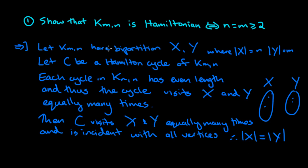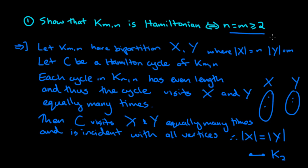Now we've seen that the size of X equals the size of Y. Of course, there are at least two vertices in each part, because otherwise — if there was only one in each part — you cannot even have a cycle in the graph. That graph is just a path on two vertices, or equivalently the complete graph on two vertices. It's too trivial to have a Hamilton cycle. So the sizes are equal and each must be at least two.